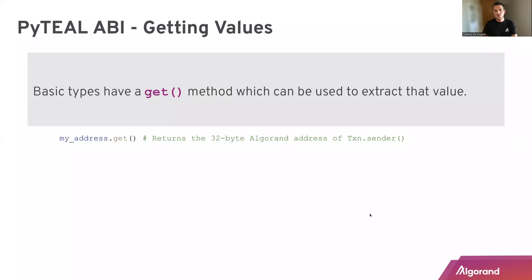We have a setter, so of course we also have a getter for these new data types. Basically, when we want to access the value of an ABI type, we just use the get method. In this example, we are getting the address stored in the my_address object using the get method.